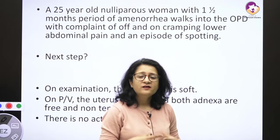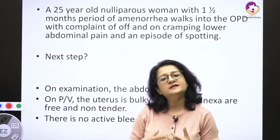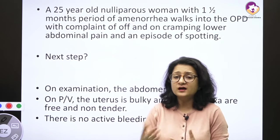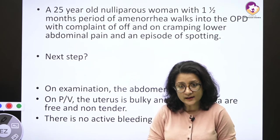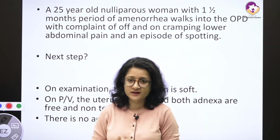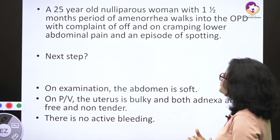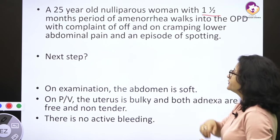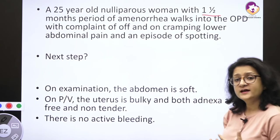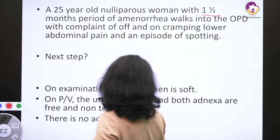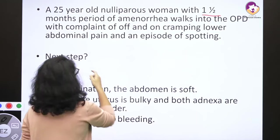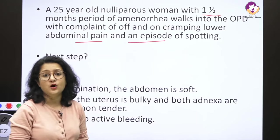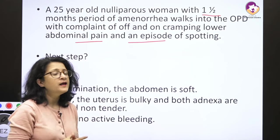I have brought together a number of clinical scenarios in which missed abortion or early pregnancy loss is a likely finding. In the first clinical situation, a 25-year-old Nali Paris woman comes with one and a half months period of amenorrhea. She walks into the OPD with a complaint of cramping, lower abdominal pain, and an episode of spotting.